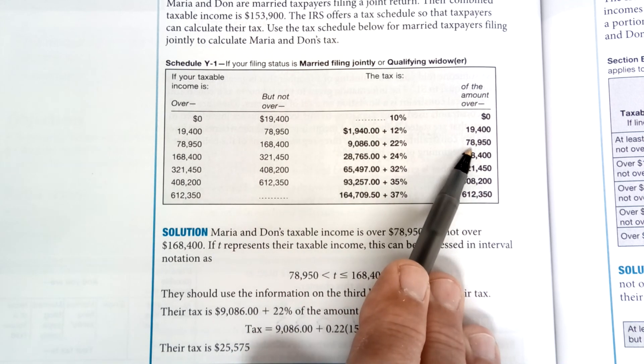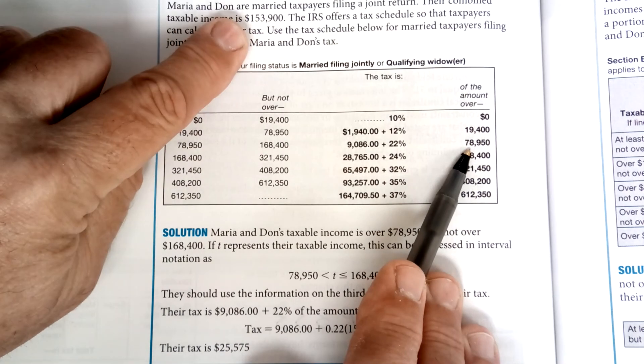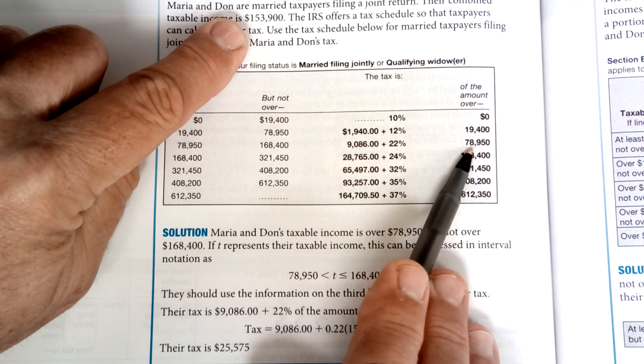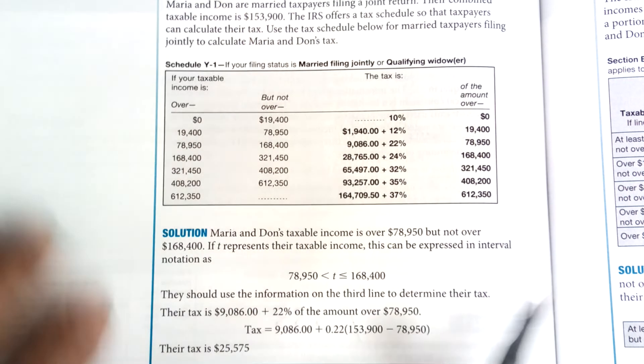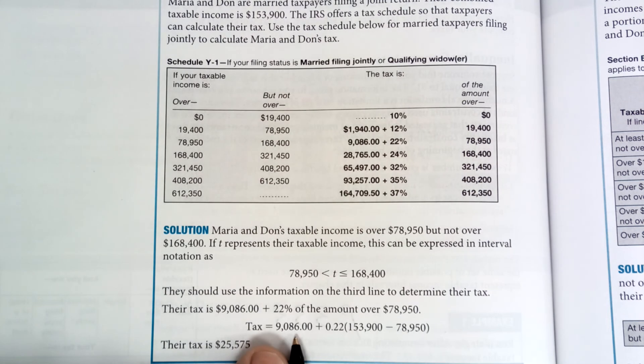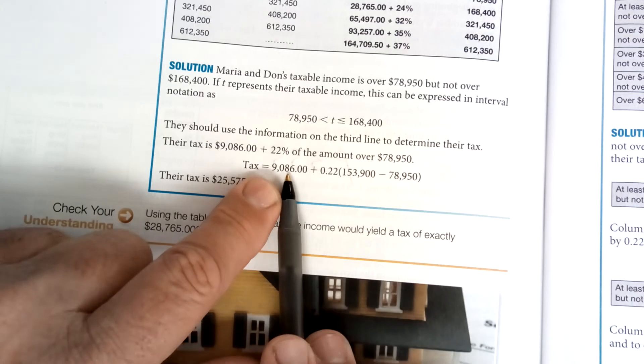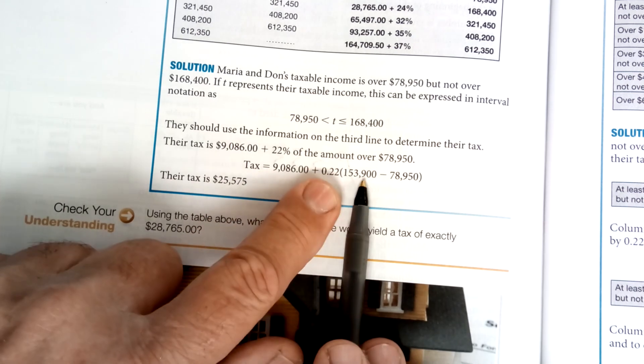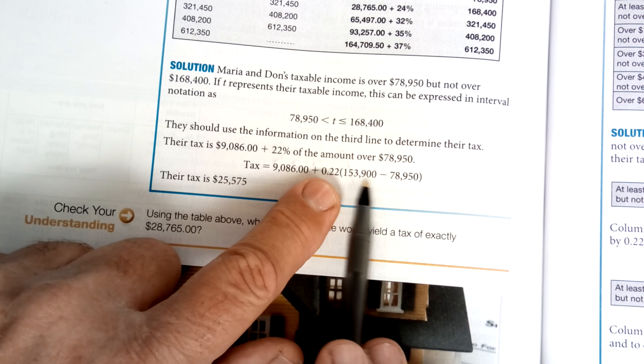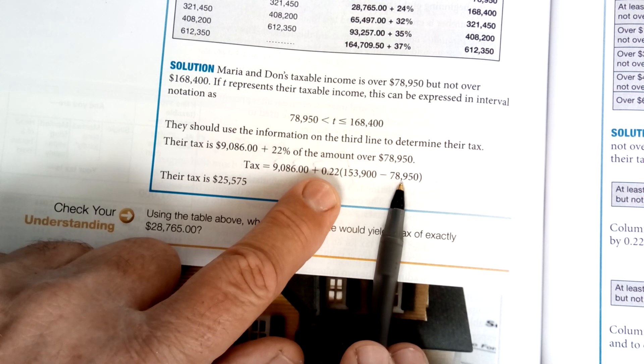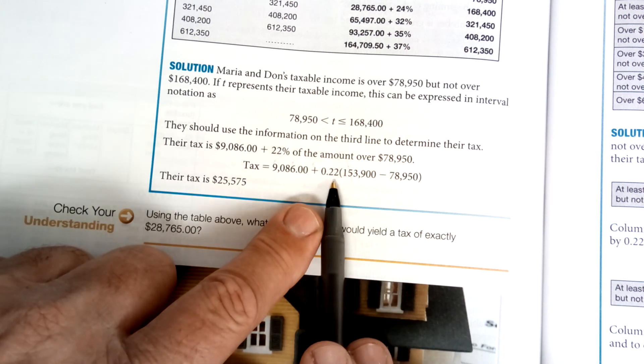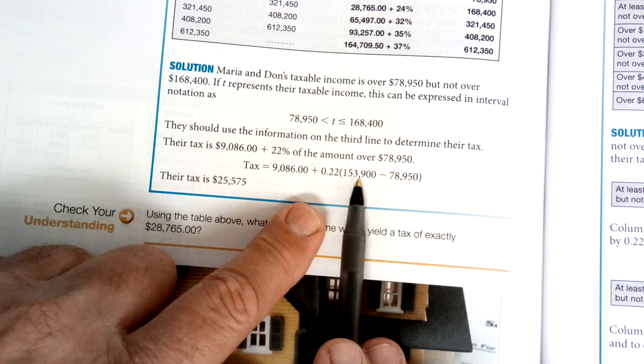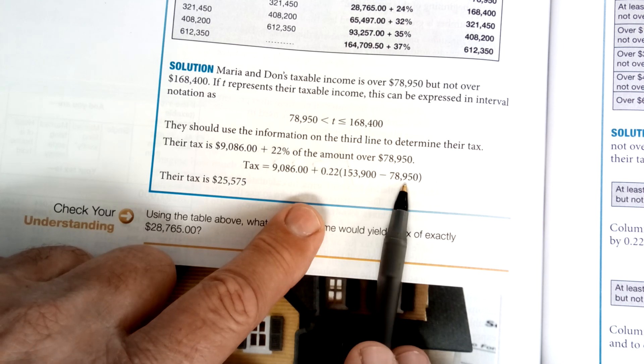So you're going to take your income right here, minus the amount that's given here, and then you're going to multiply by 0.22 and add it to the $9,000. So look at what they did. They took the $9,086 plus they took the amount that you make together minus whatever's in that table, and whatever the difference is you multiply that by 0.22. In other words, you don't multiply 0.22 times the whole income. It's the difference between whatever they tell you. So their tax is $25,000.